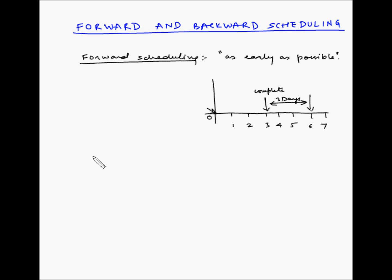Now let us look at the second method which is backward scheduling. Backward scheduling works on the principle of as late as possible.